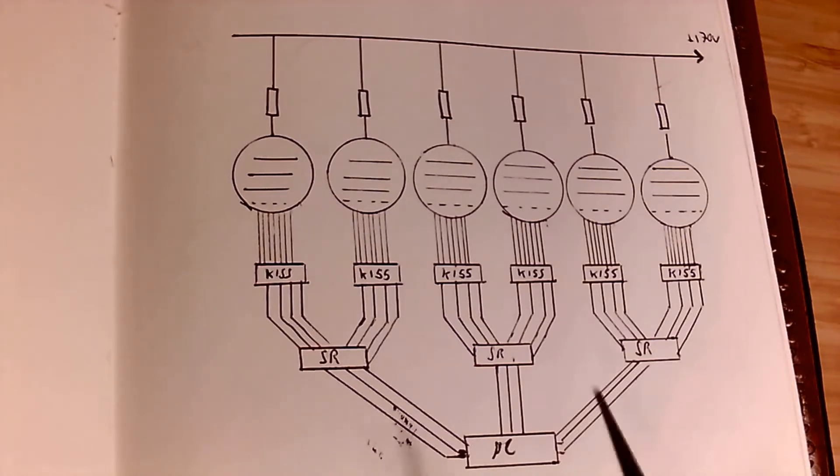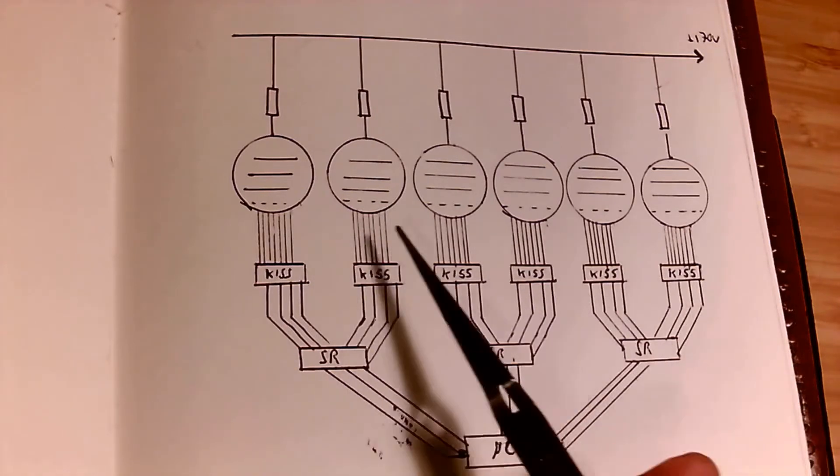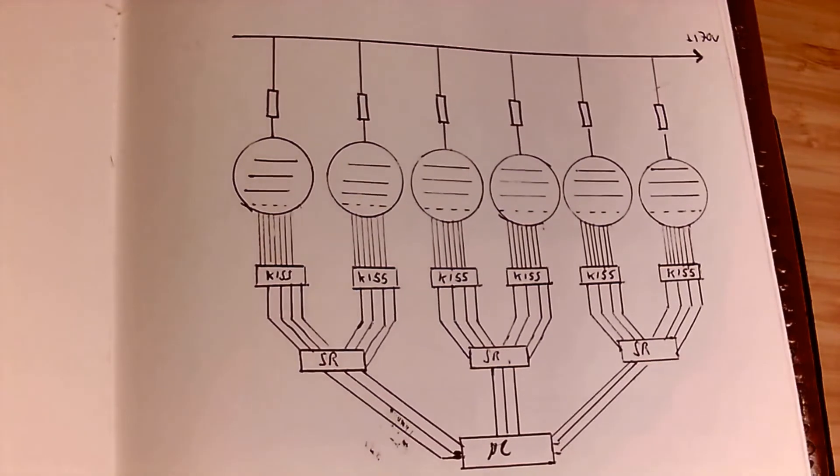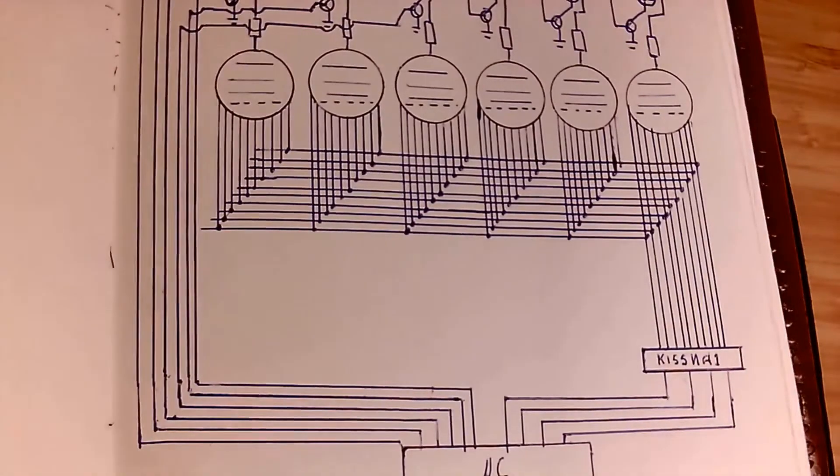You can already see there's 10 ICs on this design already, which is obviously quite expensive and takes up a lot of room on the PCB. Also, this would require all the tubes to be lit at the same time, which is less efficient. It shortens the tube lifespan and it could actually overwhelm the power supply. I'm not entirely sure how much current my supply can provide, but I'm not convinced it'd be able to do all six at the same time. So a better approach is something called multiplexing.